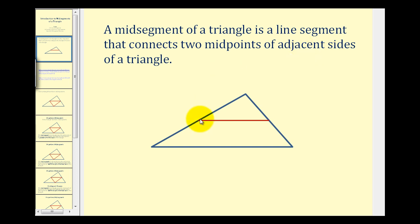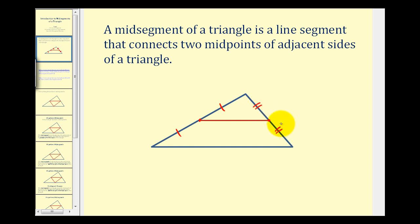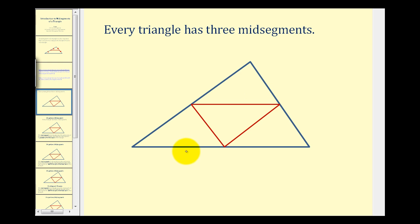This is the midpoint of this side of the triangle, therefore we know that this segment here is congruent to this segment here. And this is the midpoint on the adjacent side of the triangle, therefore this segment here is congruent to this segment here. And if we constructed all three mid-segments of a triangle,